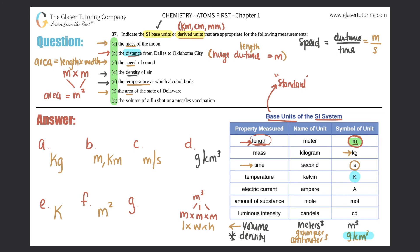And then G, the volume of a flu shot or measles vaccination. This would be the standard SI unit is meters cubed. So that would go here.